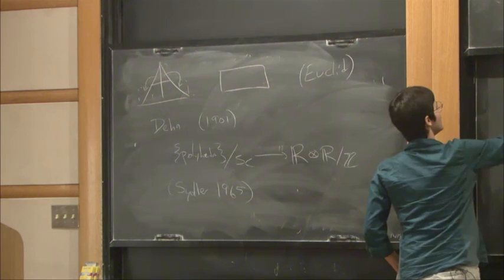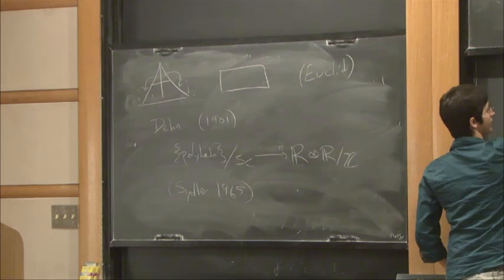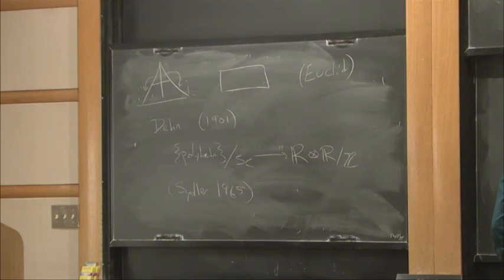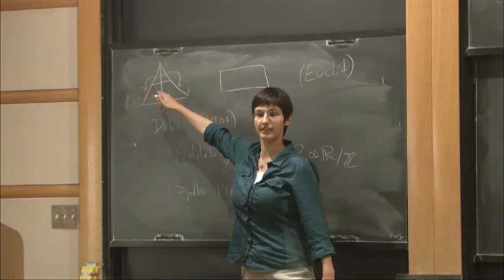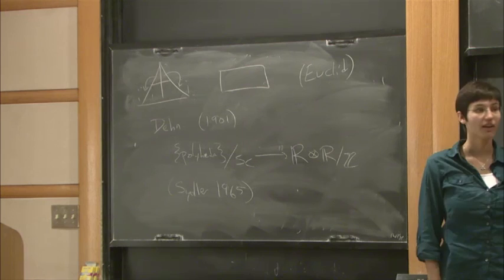As is often the case, we'll try to make a more algebraic setting for what we're doing. We're going to define the following group: P of X, where X means Euclidean space, spherical space, or hyperbolic space. This is the free abelian group generated by polytopes P in X, modulo two relations. First, if P is congruent to Q, then P equals Q. And secondly, P union Q equals P plus Q if P intersect Q has measure zero.